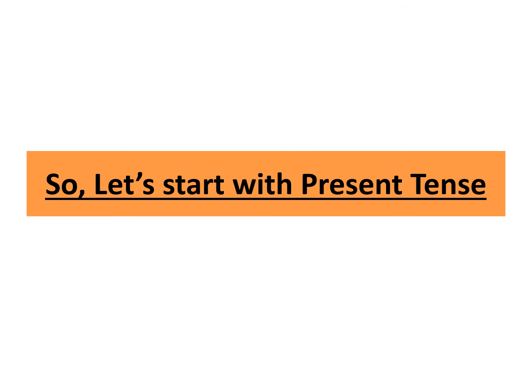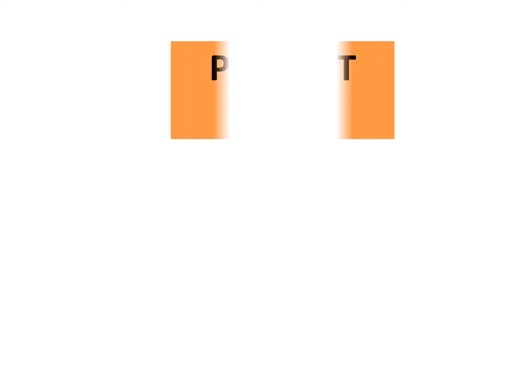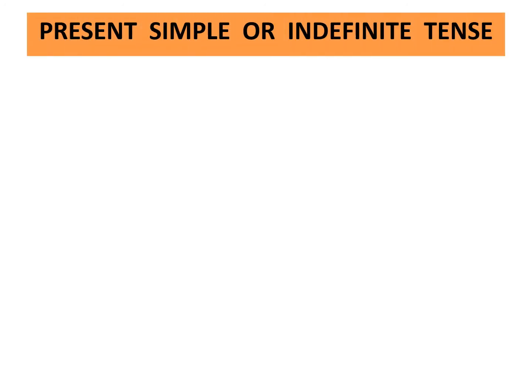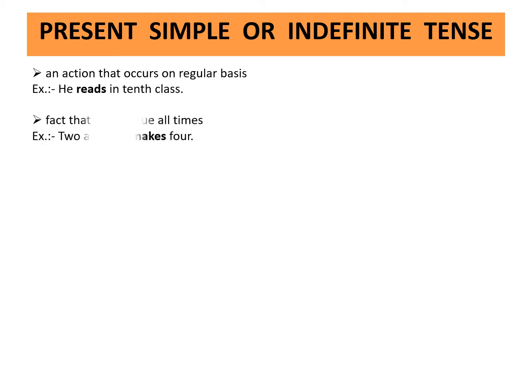So let's start with present tense. Present tense is subdivided into present simple or indefinite, present continuous, present perfect, and present perfect continuous. Present simple or indefinite tense describes an action that occurs on a regular basis. Example: He reads in 10th class. It also describes a fact that stands true at all times. Example: 2 and 2 makes 4.